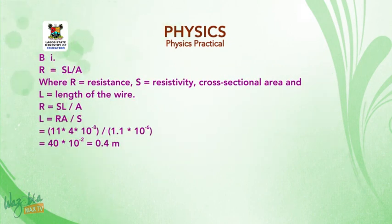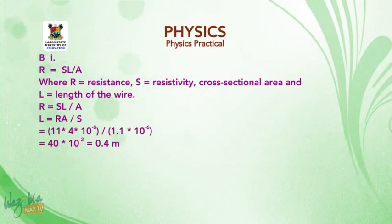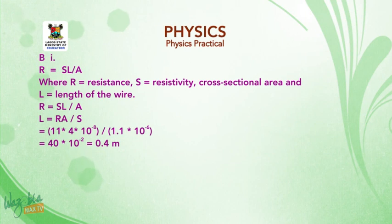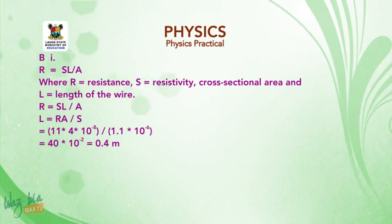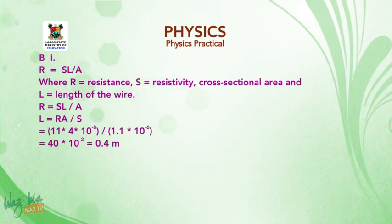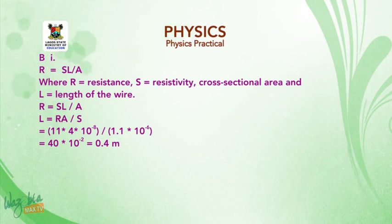B1 Solution: Resistivity ρ = RL / A, where R is resistance, L is length, and A is cross-sectional area. Making L the subject: L = RA / ρ. Substituting the values, we obtain 40 × 10⁻², which gives L = 0.4 metres.